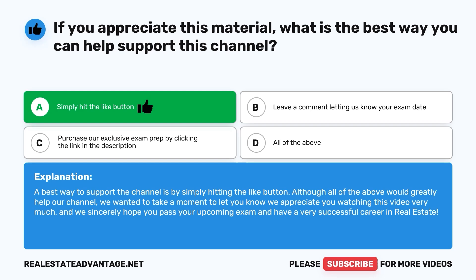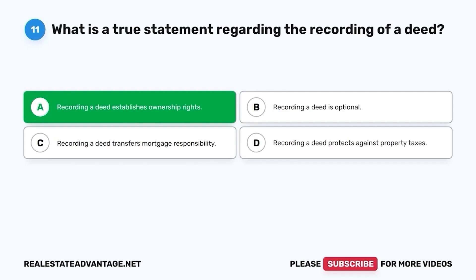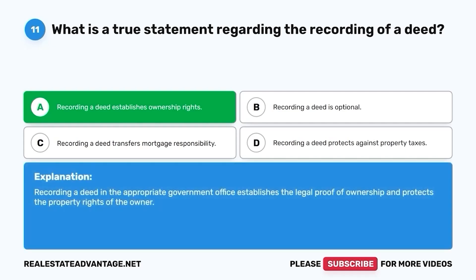We sincerely hope you pass your upcoming exam and have a very successful career in real estate. Question 11. What is a true statement regarding the recording of a deed? A. Recording a deed establishes ownership rights. B. Recording a deed is optional. C. Recording a deed transfers mortgage responsibility. D. Recording a deed protects against property taxes. The correct answer is A. Recording a deed establishes ownership rights. Recording a deed in the appropriate government office establishes the legal proof of ownership and protects the property rights of the owner.